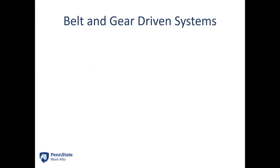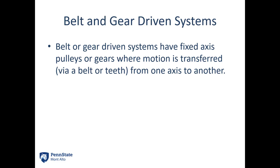A belt or gear driven system will have fixed axis pulleys or gears where motion is being transferred via belt or the teeth of a gear from one axis to another. This is building on our fixed axis rotation because we've got multiple fixed axis rotations going on at once.